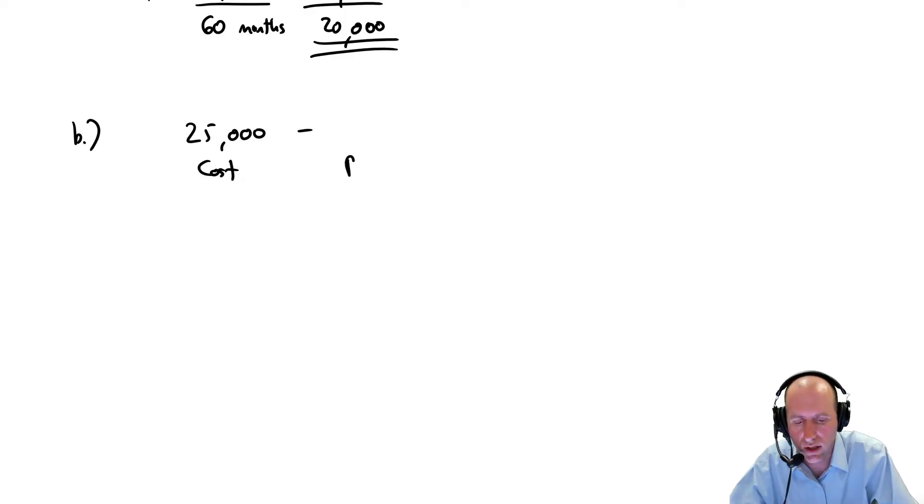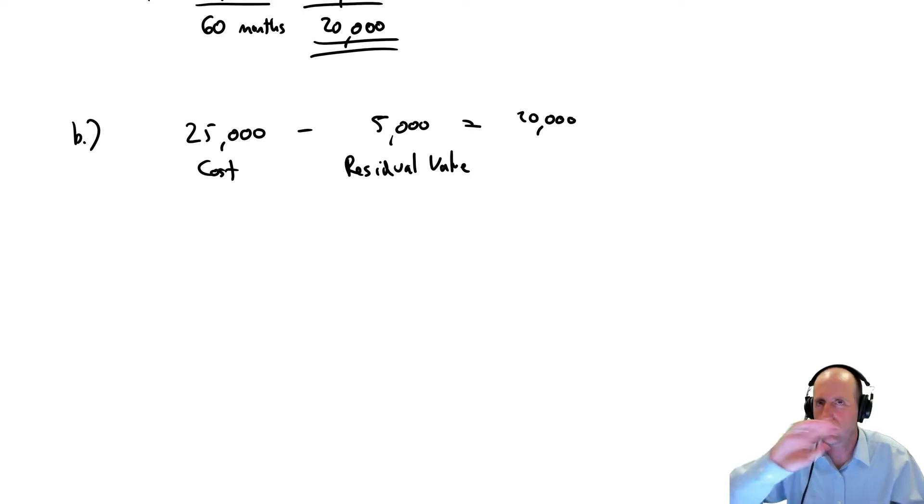The residual value, that salvage value, if you will, was $5,000. And so the depreciable cost is $20,000. So we kind of have the same starting point for straight-line or units of production, the depreciable cost being $20,000 in both cases.